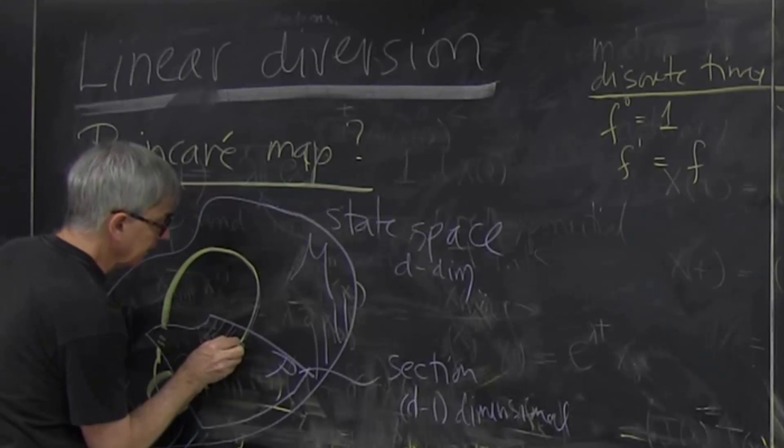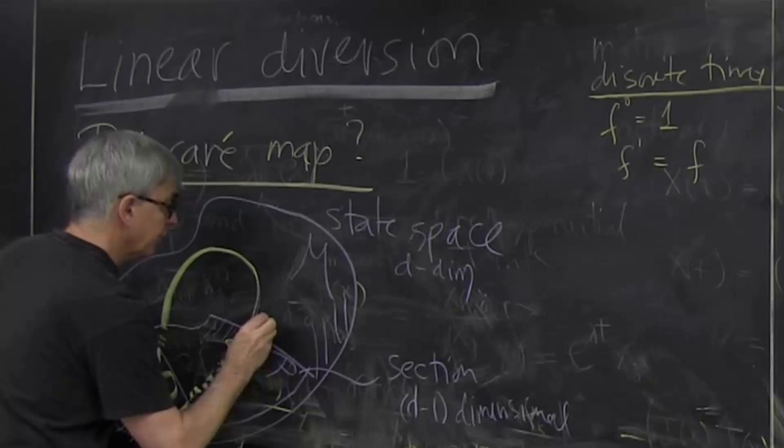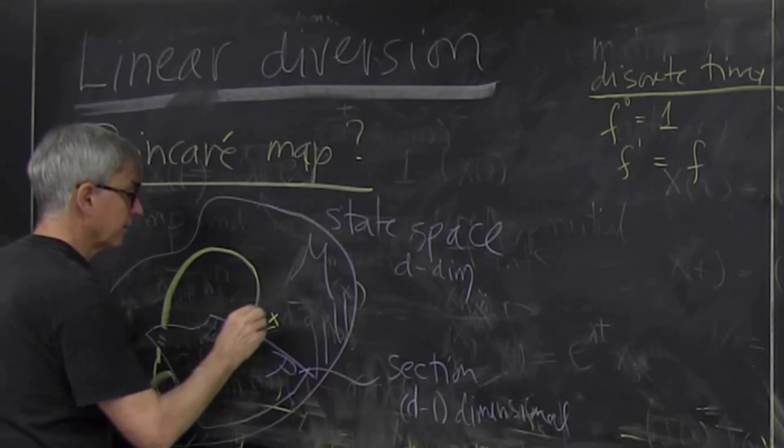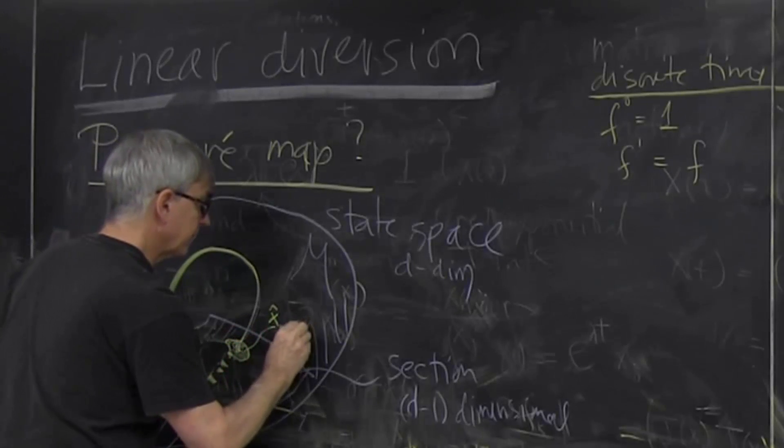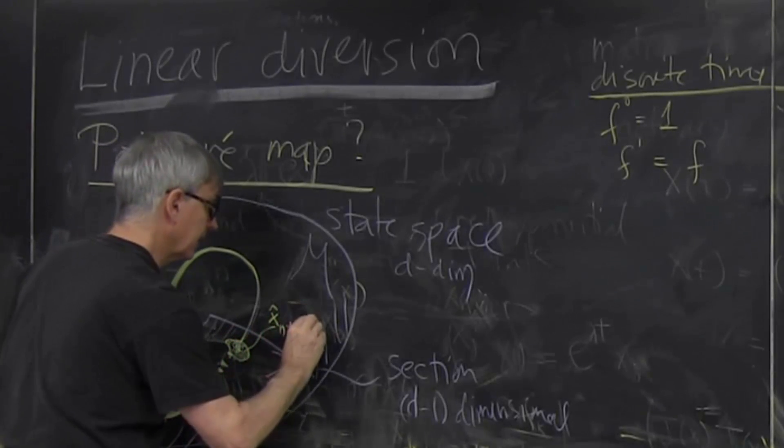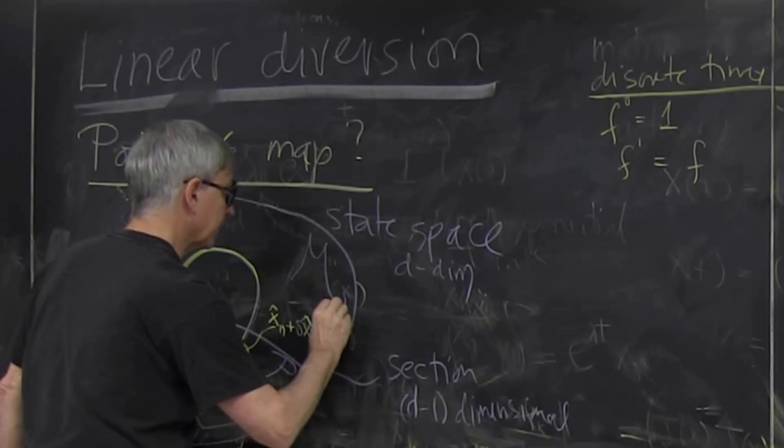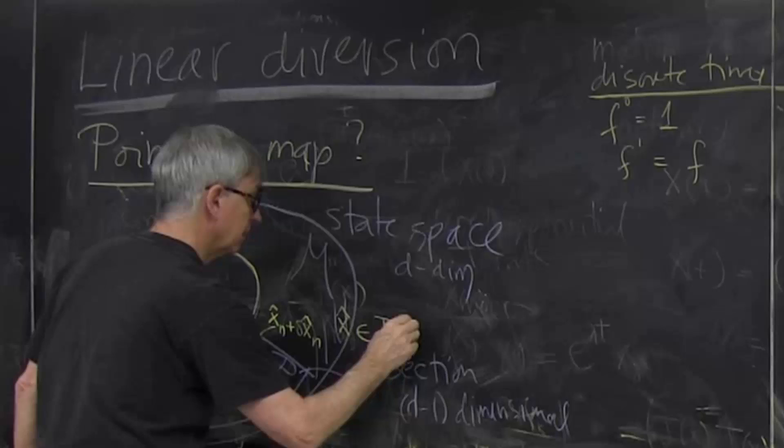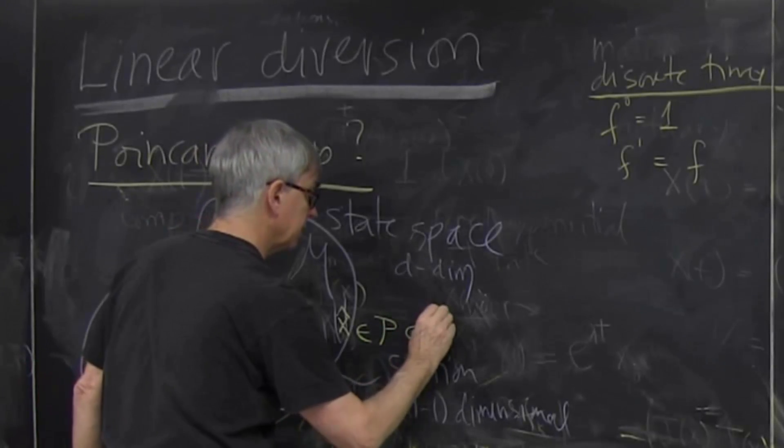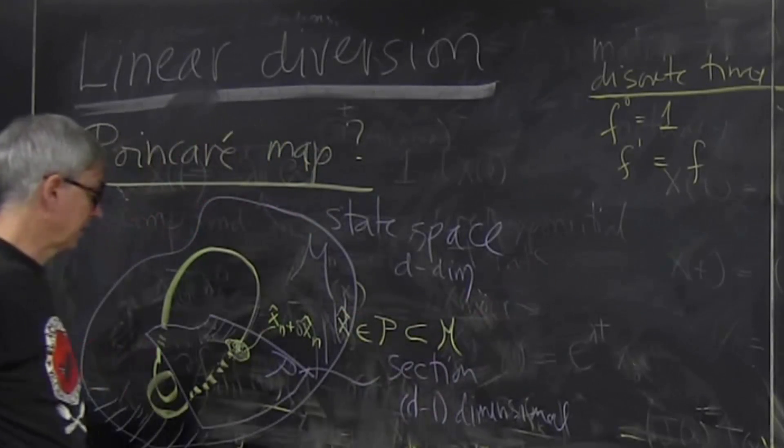It's intuitively obvious that if I have a neighborhood, so I take some, in this Poincaré section, I take a neighborhood. So these are points, this is called x of n, the center, plus dx of n. And hat means that anything that has a hat in it is in the section, which is embedded in the space, but it's in the section.